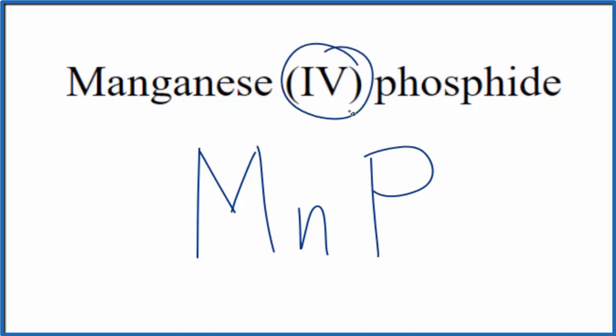We know that the manganese, this IV here, our Roman numeral 4 tells us we have this transition metal and it's going to be 4+. Phosphorus on the periodic table that's in group 15, sometimes called 5A, that has a 3- ionic charge.